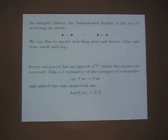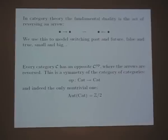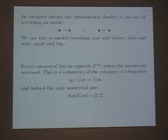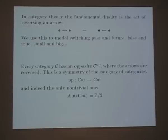The current most general concept of duality I know of arises in category theory. In category theory the fundamental duality is the act of reversing an arrow — thinking of an arrow from X to Y as an arrow from Y to X. We use this basic duality to model switching past to future, false and true, small and big in an ordered set — switching small elements to big elements.